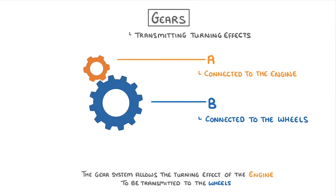Because the two gears are interlocking, any rotation of gear A will cause gear B to rotate as well. So effectively, the gear system allows the turning effect of the engine to be transmitted to the wheels, because the engine rotates gear A, which in turn rotates gear B, which in turn makes the wheels rotate.